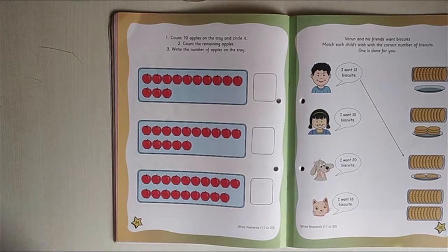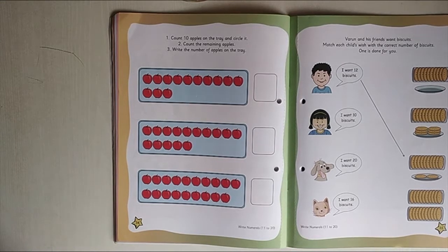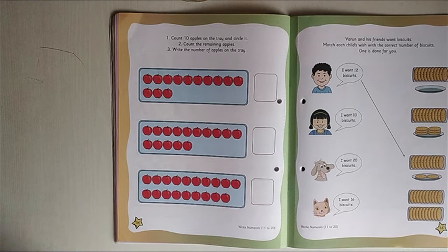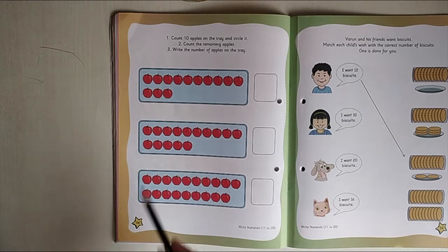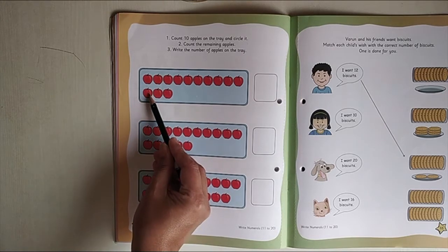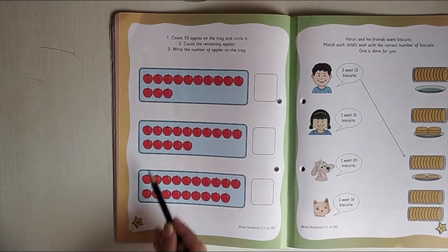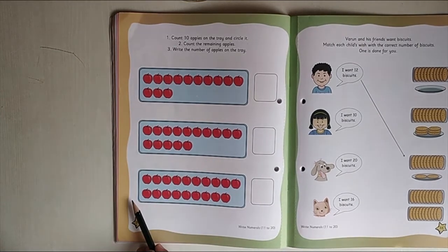Children, are you ready for the fun activity? Today we are going to do this activity in little thinker mathematics. Here children, there are three boxes. This is a tray full of apples. One more tray full of apples and another tray, three trays full of apples.